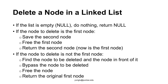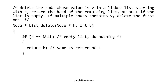Let's read the code that implements the delete function. The function takes two arguments: the first is a pointer to the first node of the linked list, and the second is a value. This function returns the address of the new linked list after deleting a node whose value matches the second argument. If h's value is null, the input linked list is empty and nothing can be deleted.